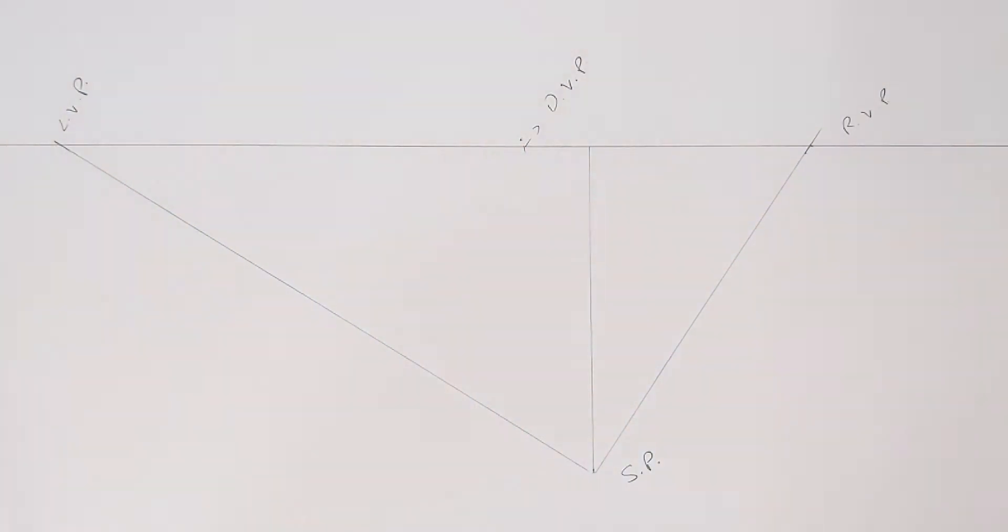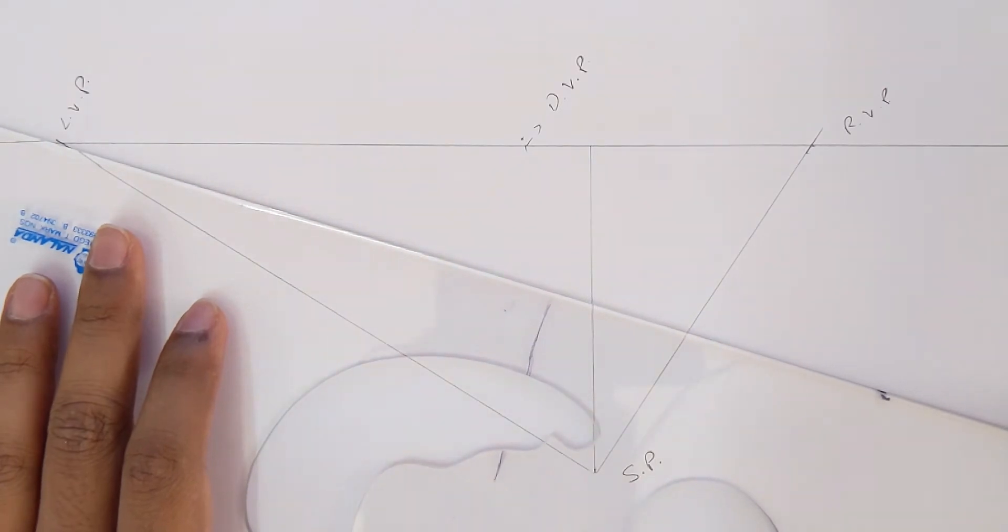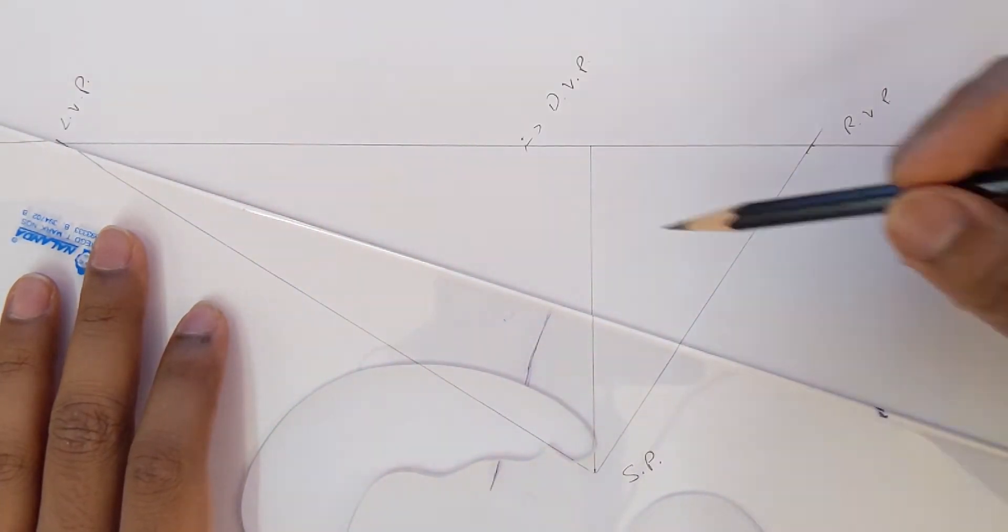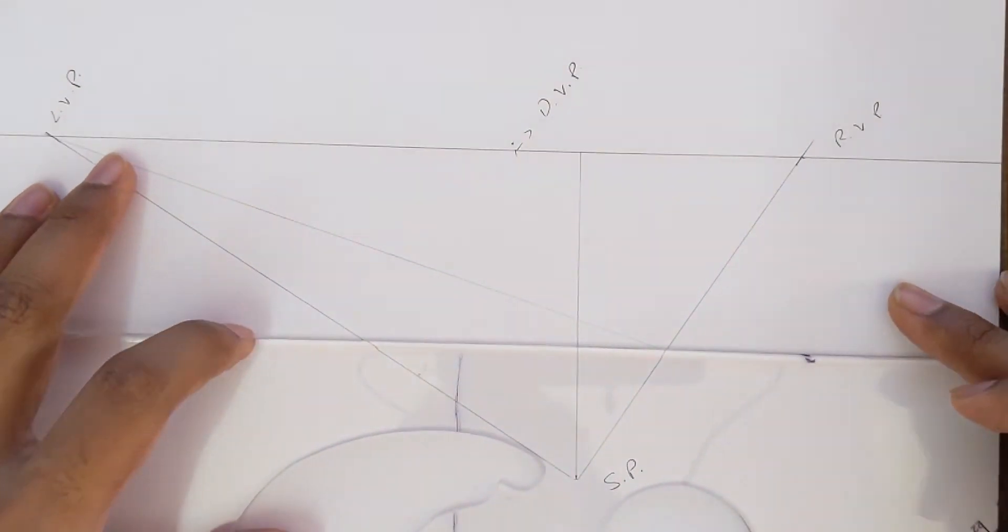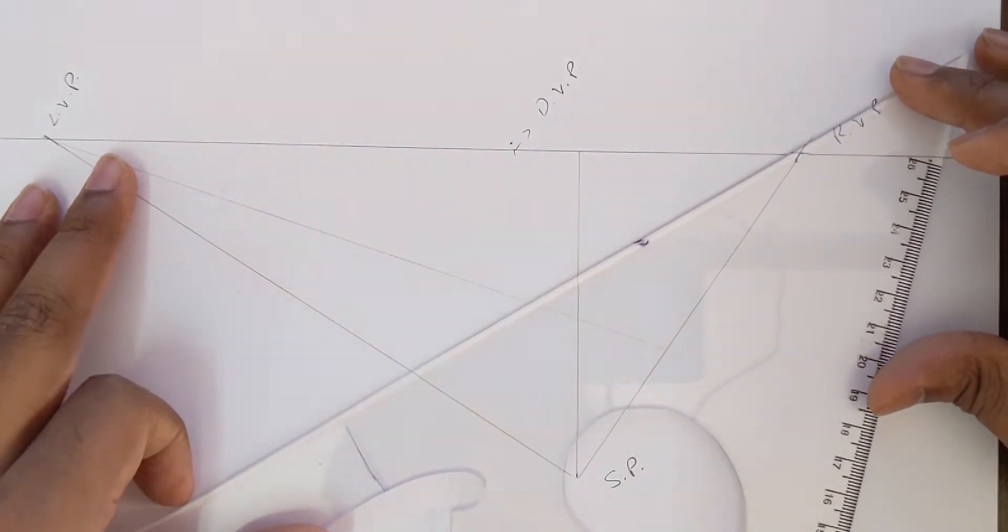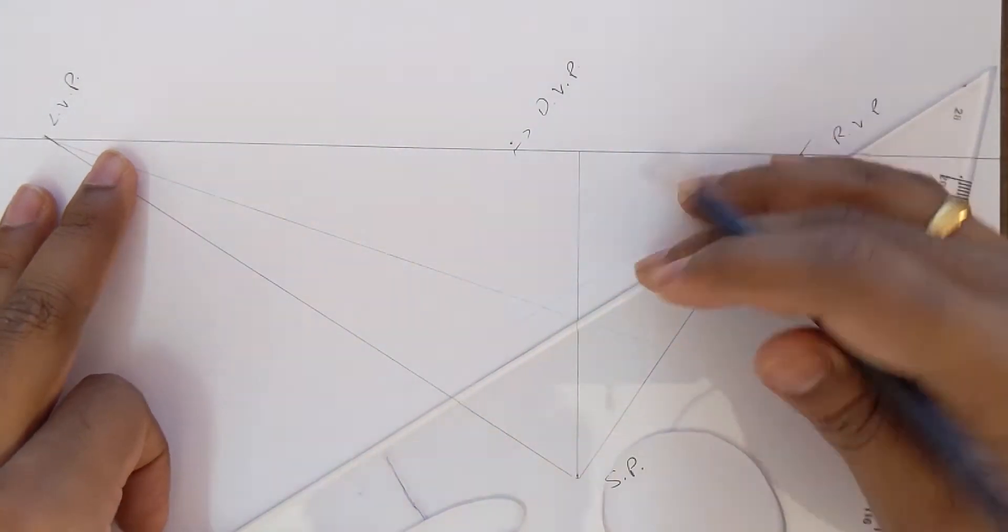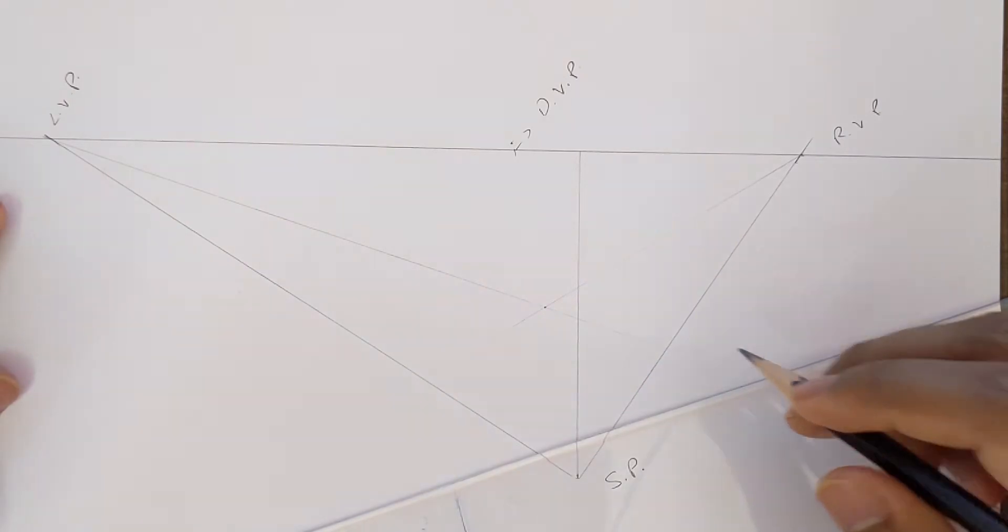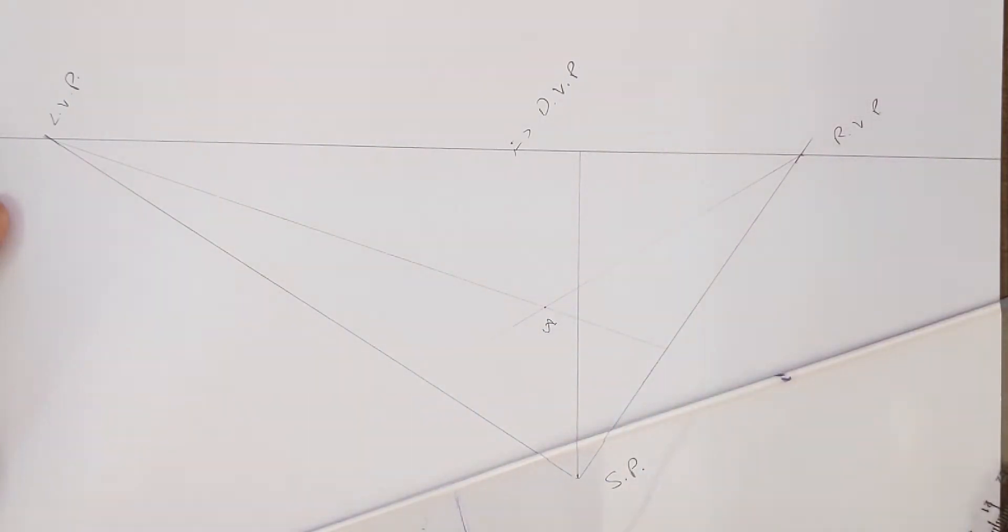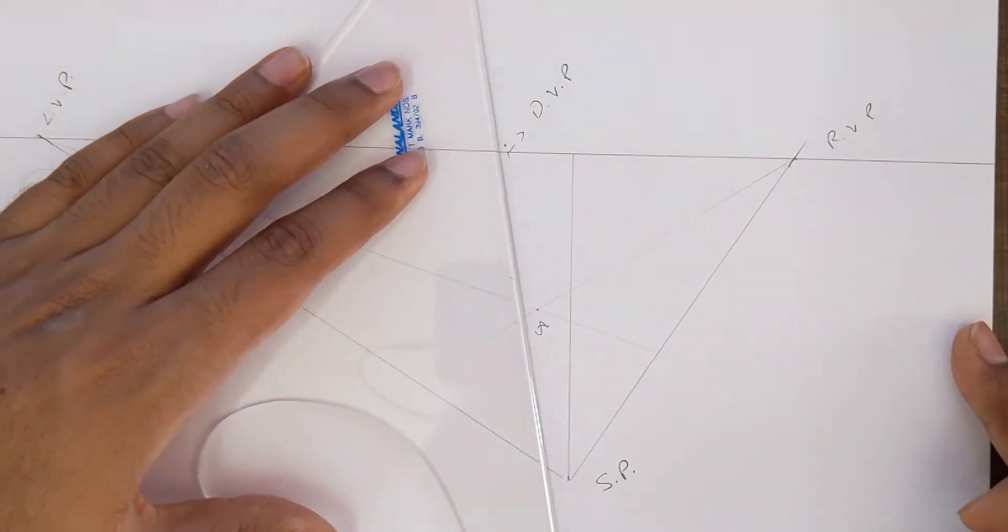Once we have this, draw a line from our left vanishing point, and repeat the same thing from our right vanishing point as well. This intersection, let us name it as point A.